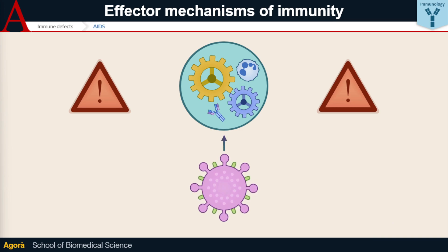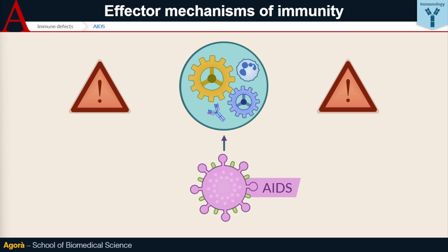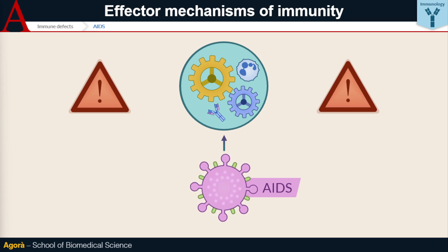These immune defects can result from inherited genetic diseases or can be acquired during an individual's lifetime. The most prevalent and famous acquired immune defect is the acquired immunodeficiency syndrome, AIDS, caused by two viruses — HIV-1 and HIV-2 — which can infect CD4-expressing cells, thus T cells, dendritic cells and macrophages.